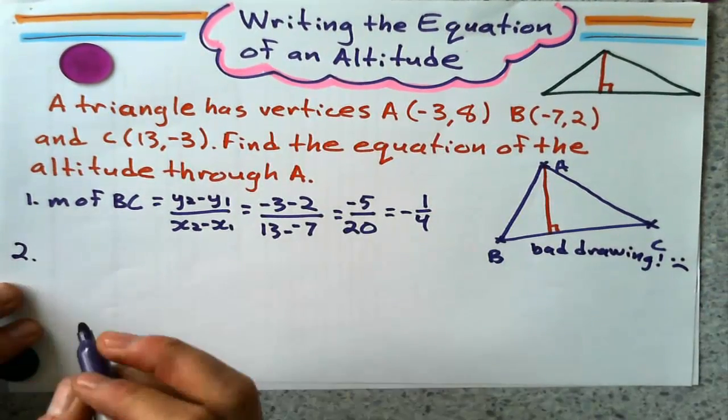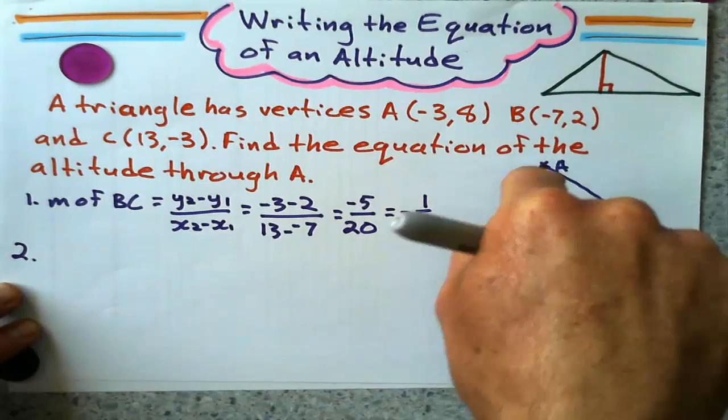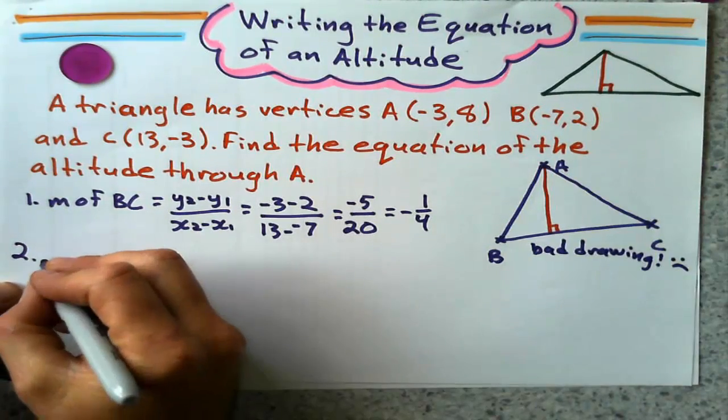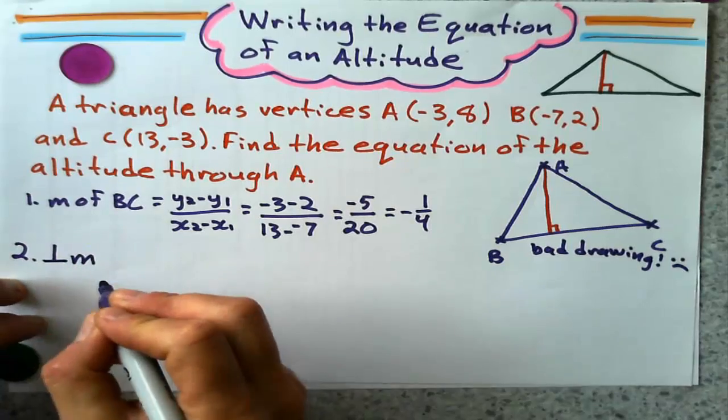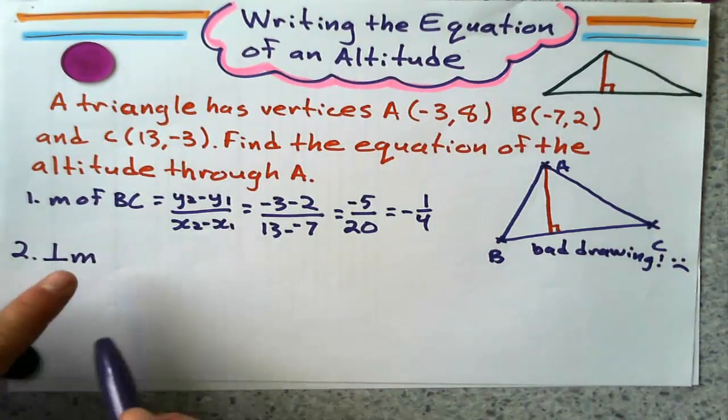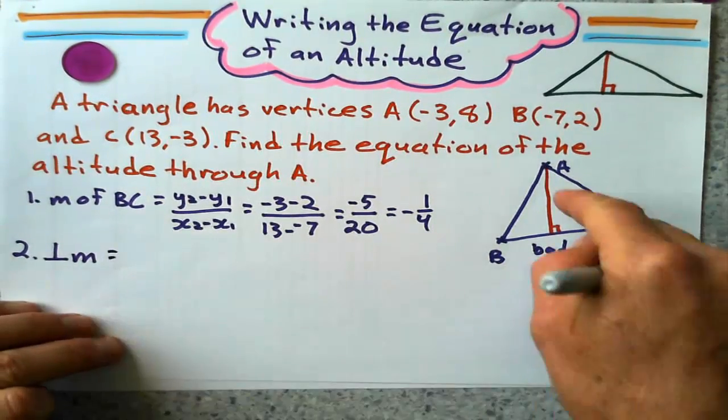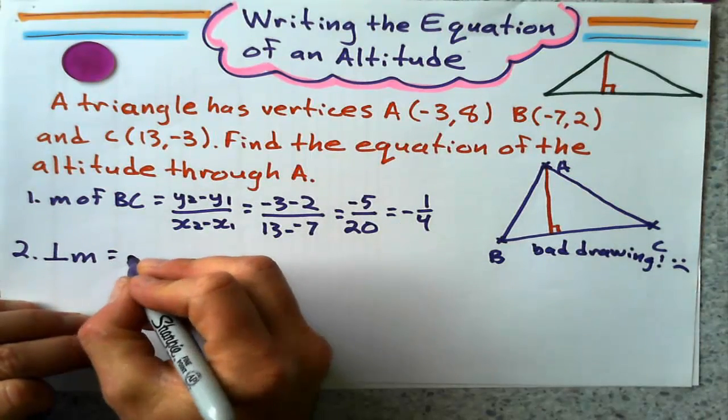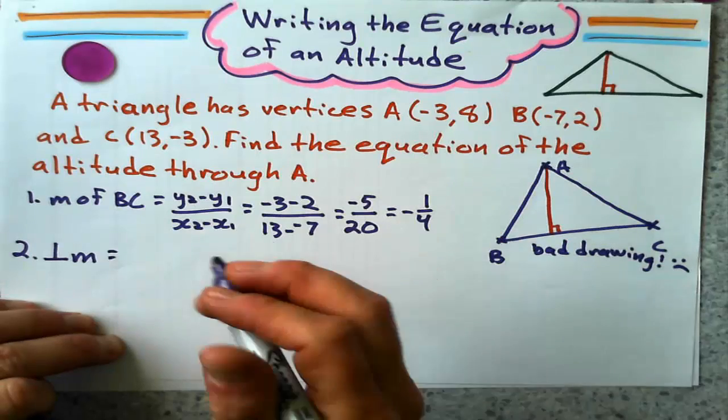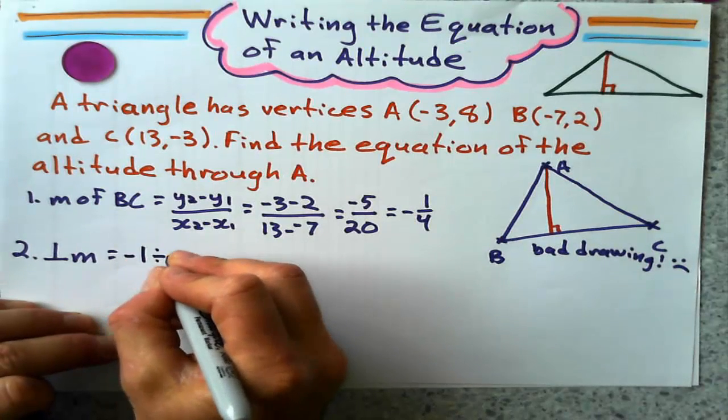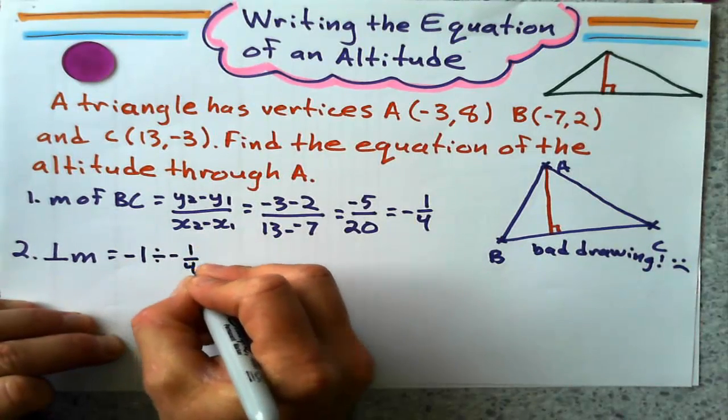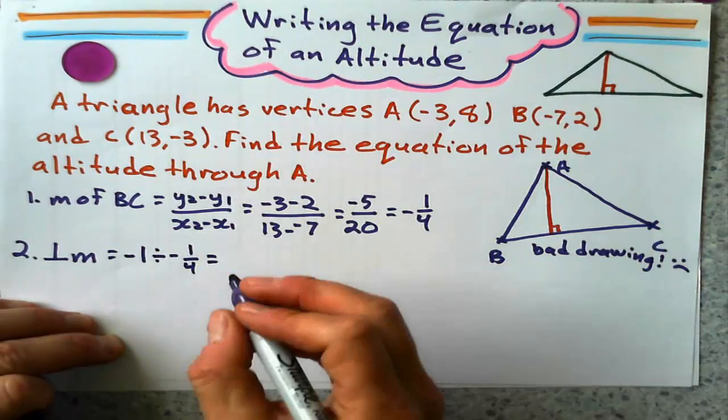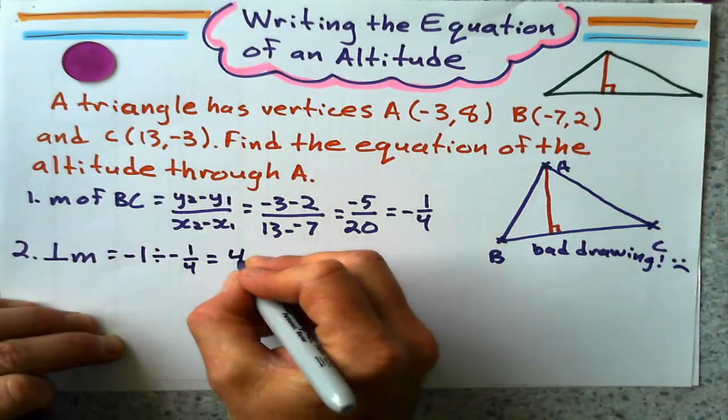Next step, let's find the gradient of the median, or gradient of the altitude, sorry. And I do the perpendicular gradient. So the perpendicular gradient, or just the gradient of the altitude, is going to be the opposite reciprocal, or negative 1 divided by negative 1 quarter, which is pretty easy to figure out. It's just going to be the opposite reciprocal. It's just going to be 4.